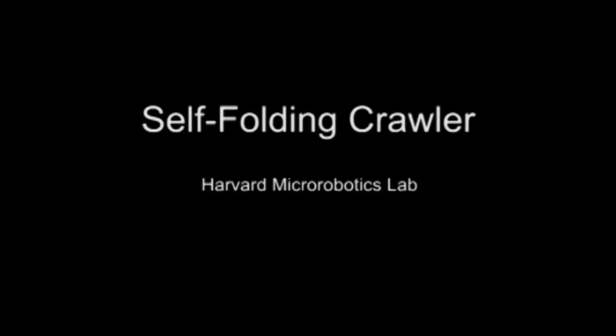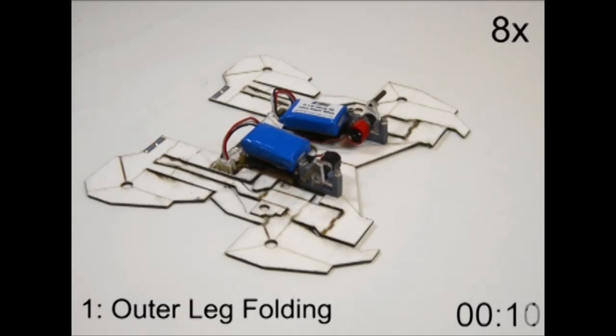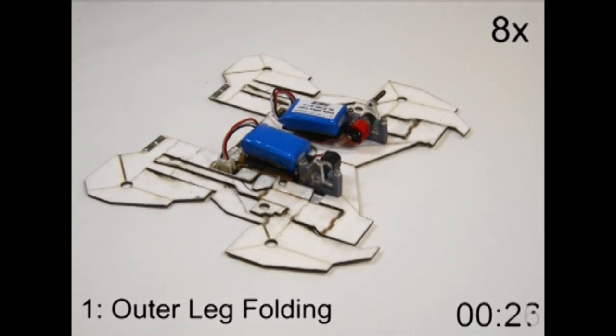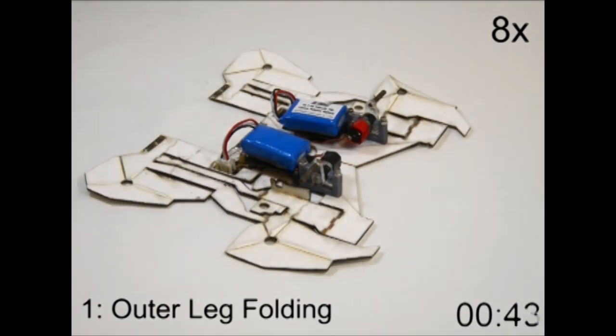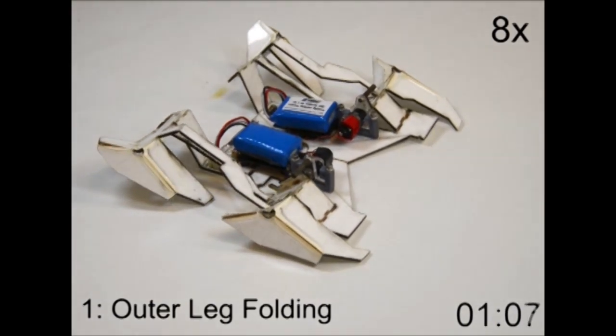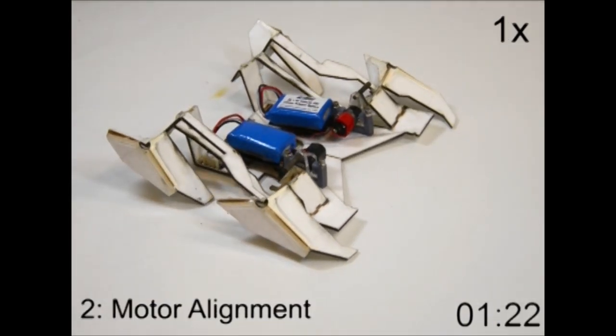Inspired by the traditional Japanese art form of origami, or folding paper, researchers have developed a way to coax flat sheets of composite materials to self-fold into complex robots that crawl and turn.